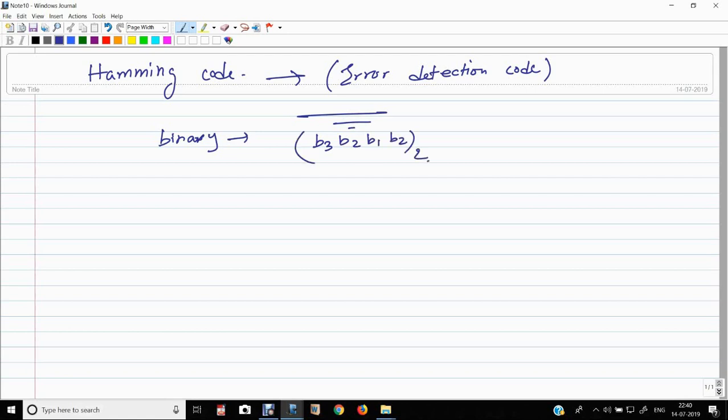This Hamming number will be h1, h2, h3, h4, h5, h6, h7. This is nothing but a formula. We need to remember this.